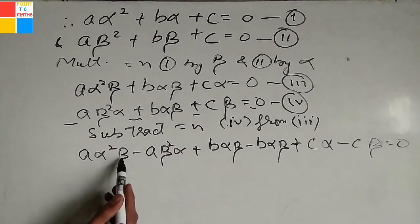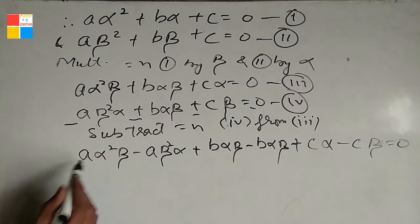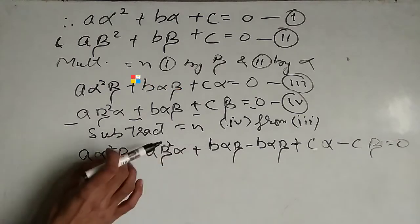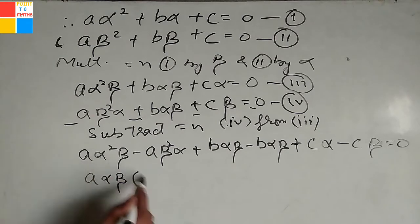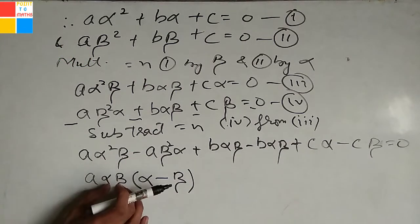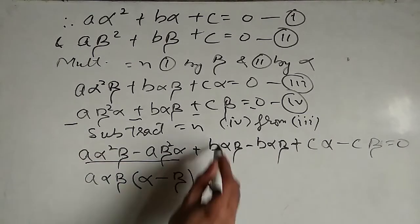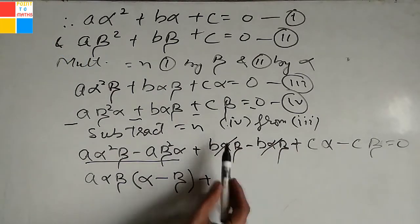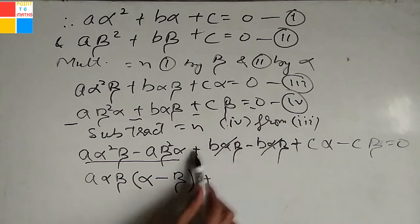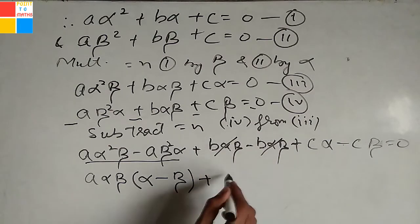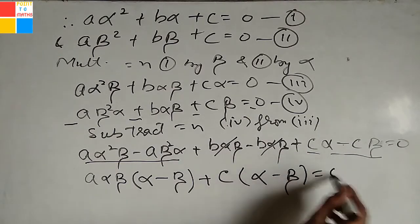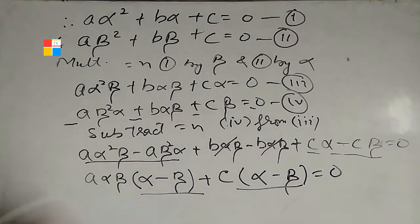So this is a·alpha squared·beta minus a·beta squared·alpha. Taking a·alpha·beta as the common factor from both terms, we get a·alpha·beta·(alpha minus beta). Taking c as common factor from the remaining terms gives c·(alpha minus beta). So we have a·alpha·beta·(alpha minus beta) plus c·(alpha minus beta) equals zero. Taking (alpha minus beta) as common factor yields: (alpha minus beta)·(a·alpha·beta minus c) equals zero.